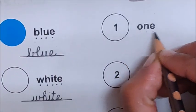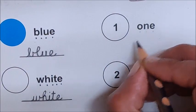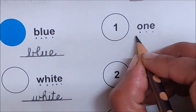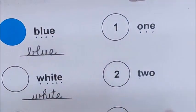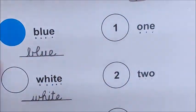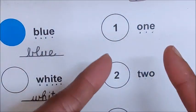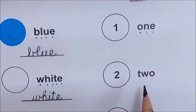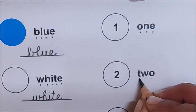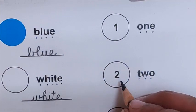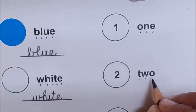Mark the letters in this first number name: O-N-E, 1. Now let us clap and say O-N-E, 1. What is one? One is a number. This is number one. Go to the next number name. Mark the letters T-W-O, 2. This is number two. T-W-O is number two.